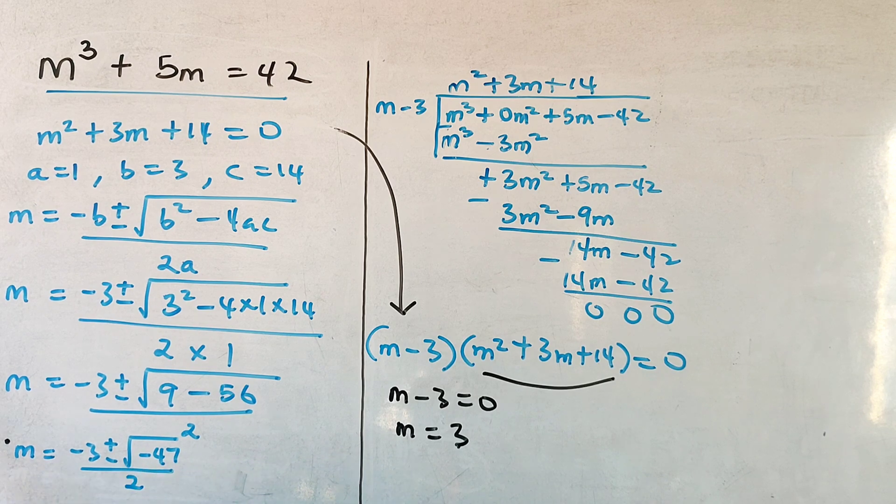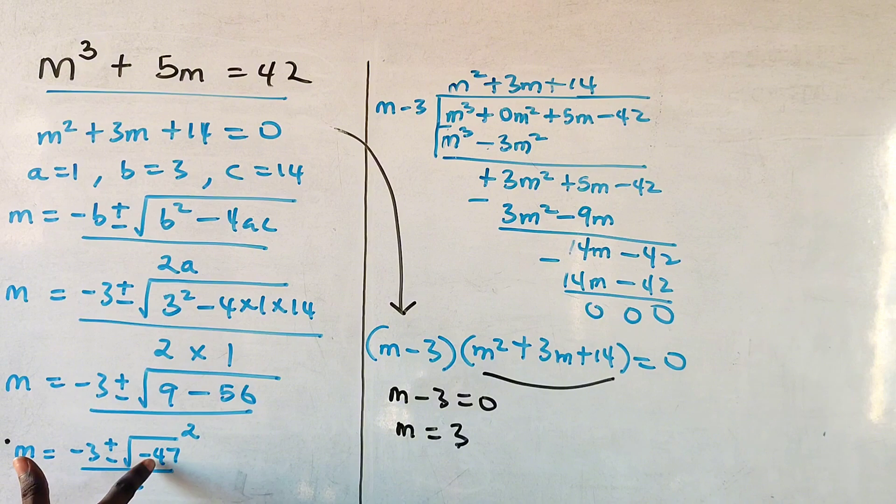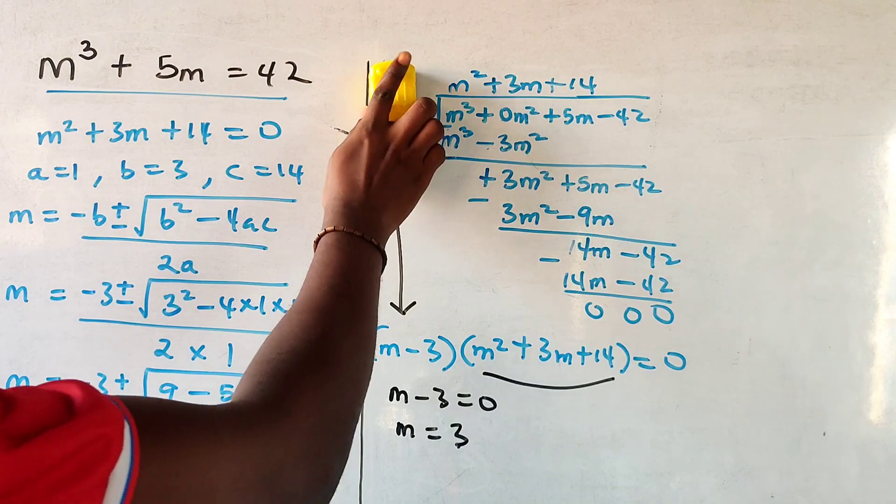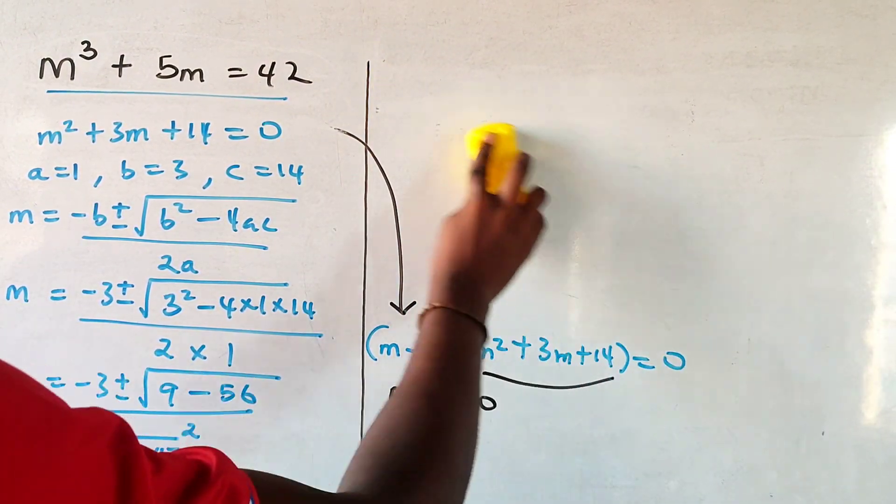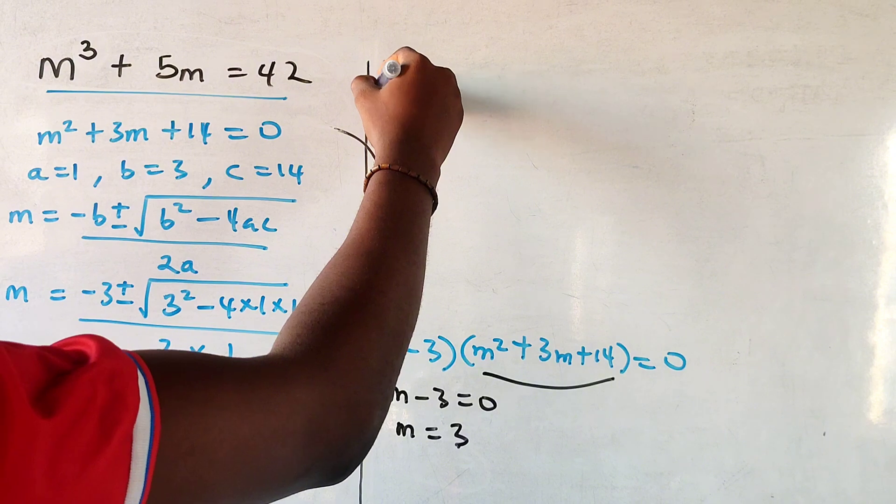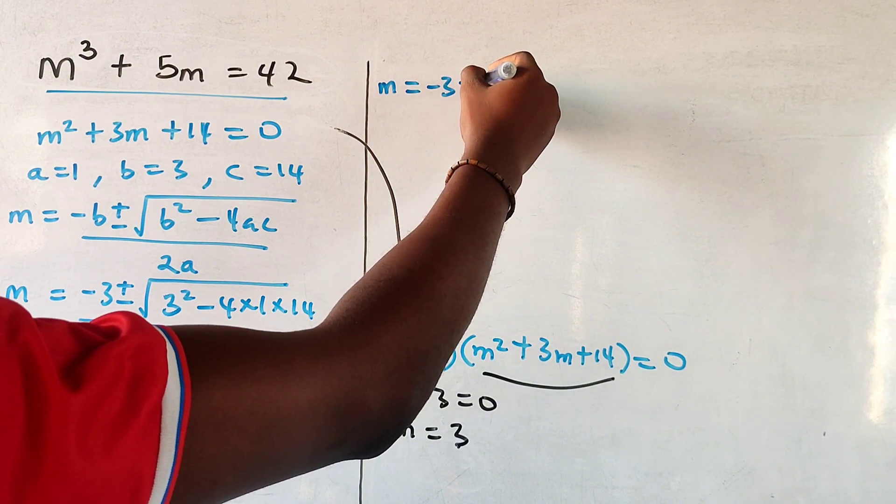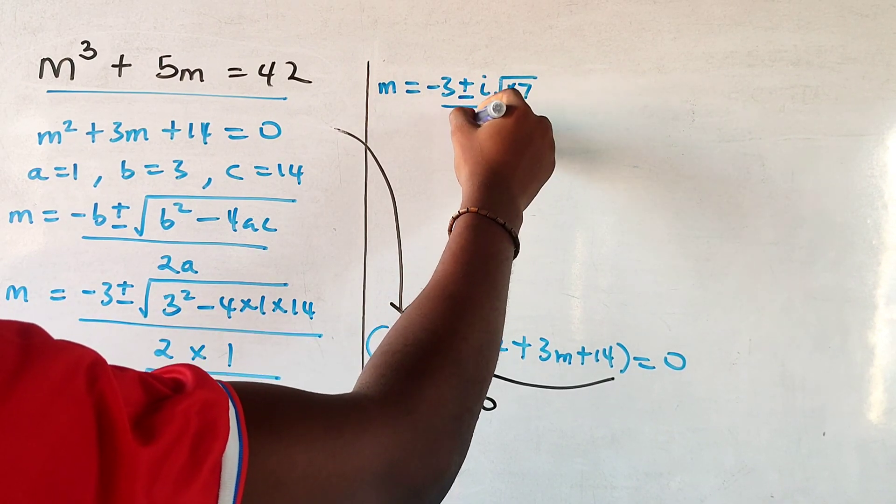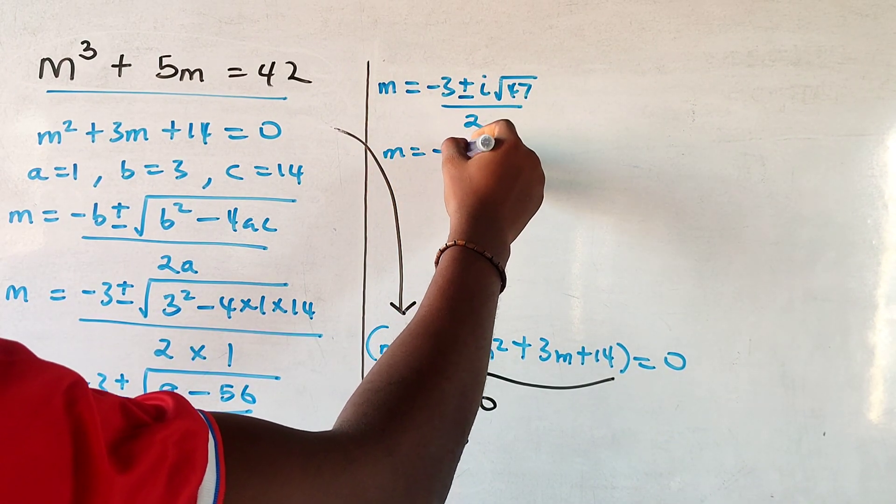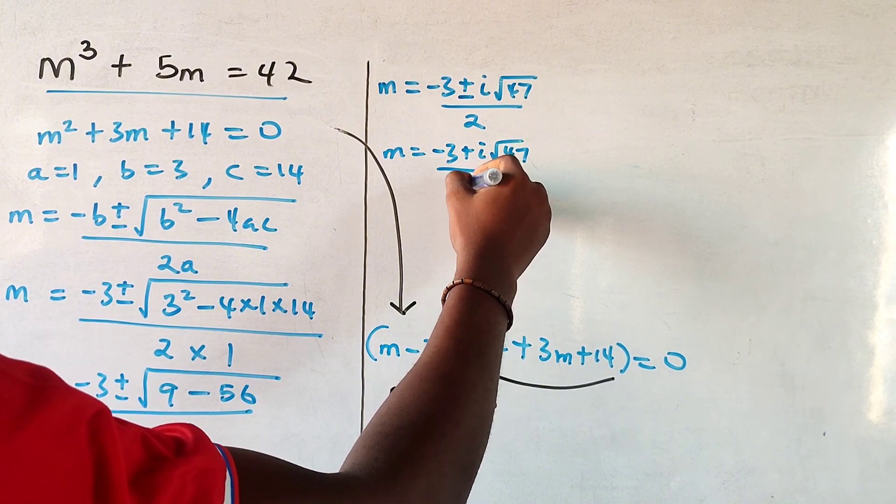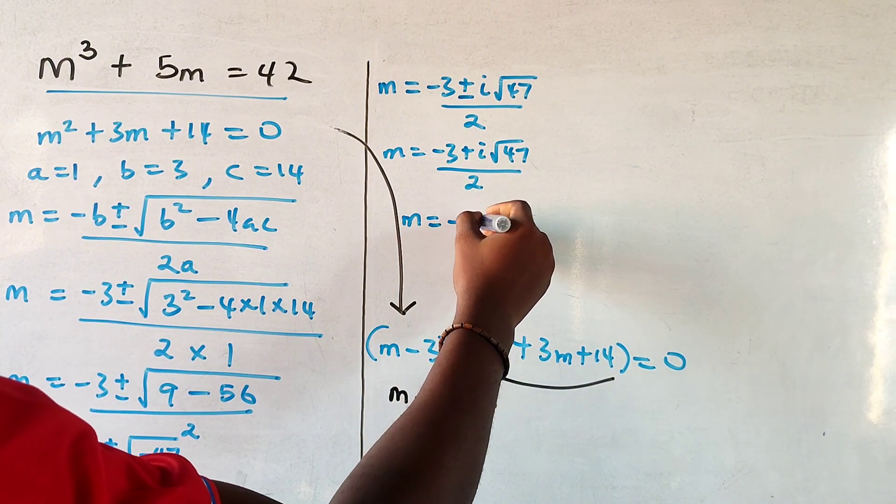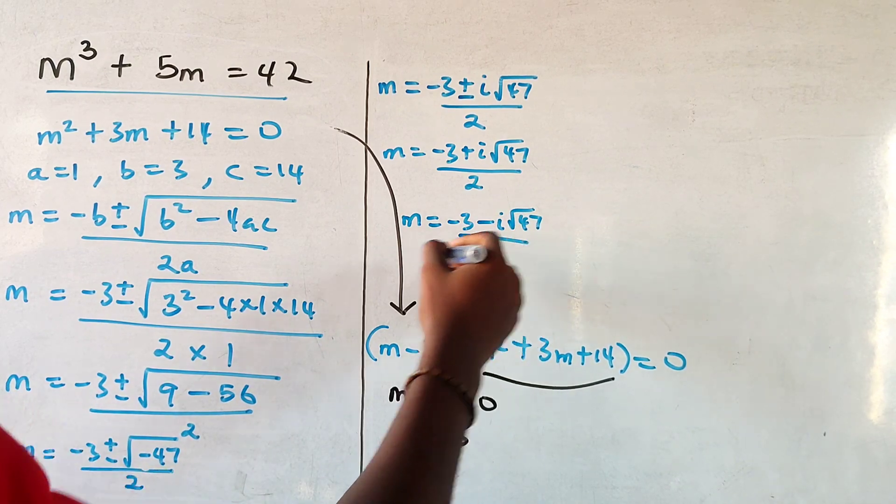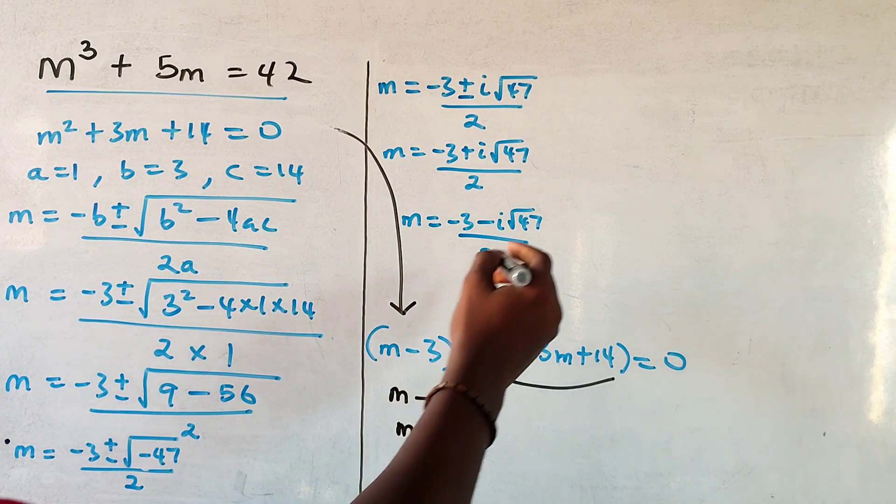Now you can clearly see that this will give you an imaginary root because you have a negative square root, or square root of a negative number. So m will have two values. m would be minus 3 plus i root 47 over 2, and m will be minus 3 minus i root 47 over 2. So these are your three values for m: this, this, and this.